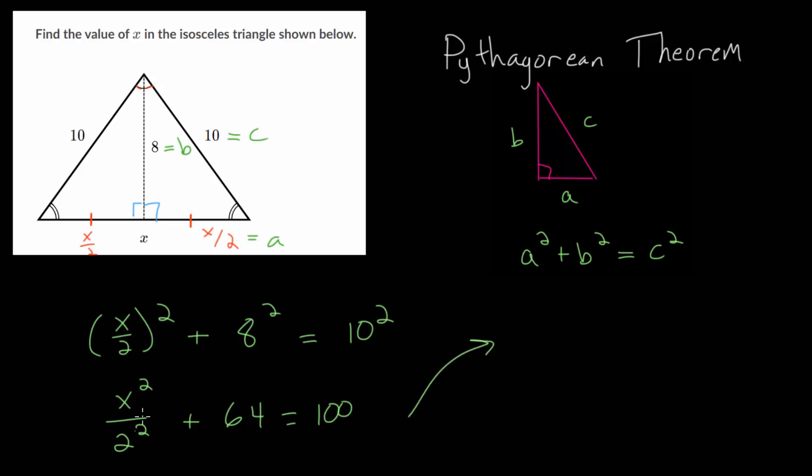Here x squared is over 4, and let's subtract 64 on each side. So 100 minus 64 is just 36, and let's multiply each side by 4. So x squared equals 4 times 36, that's 144.